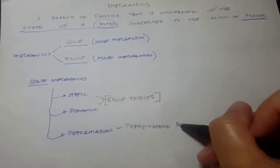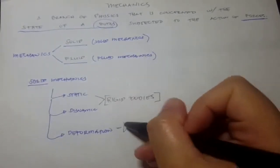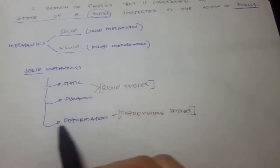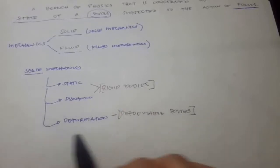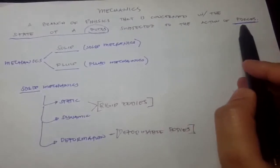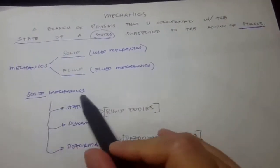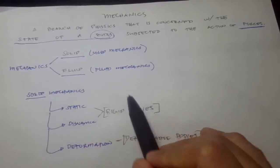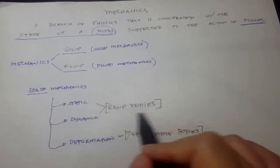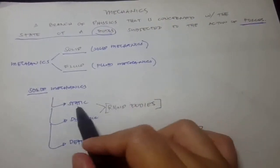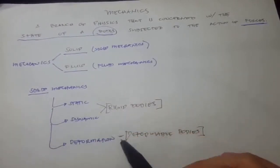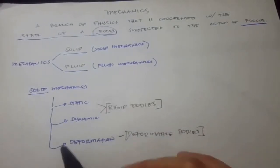For deformable bodies, instead of not considering the deformation, we now consider the deformation of the body when a certain force is applied. So for solid mechanics, we have rigid bodies — where we discuss statics and dynamics — and deformable bodies, where we discuss deformation.